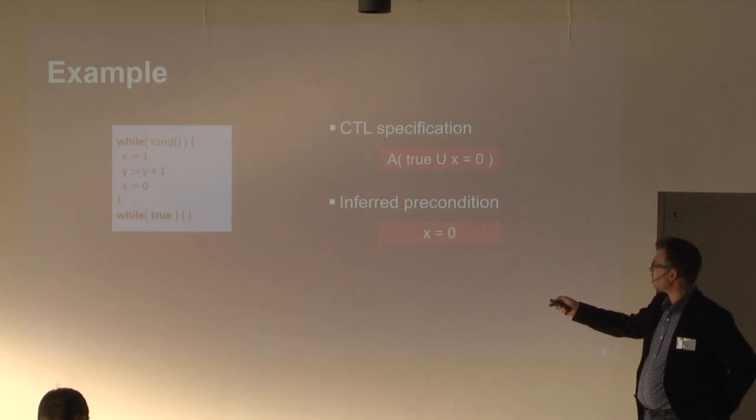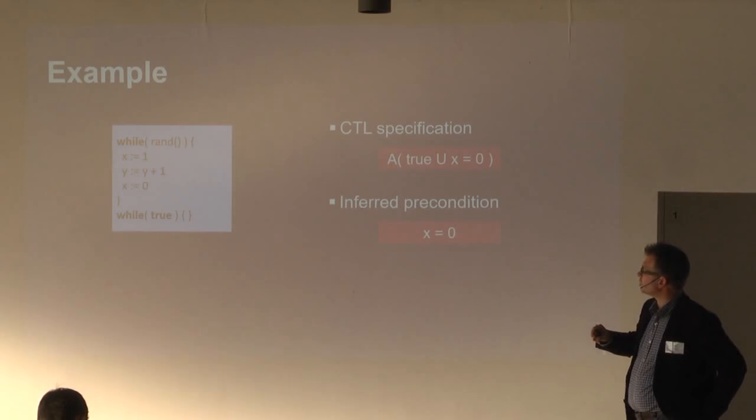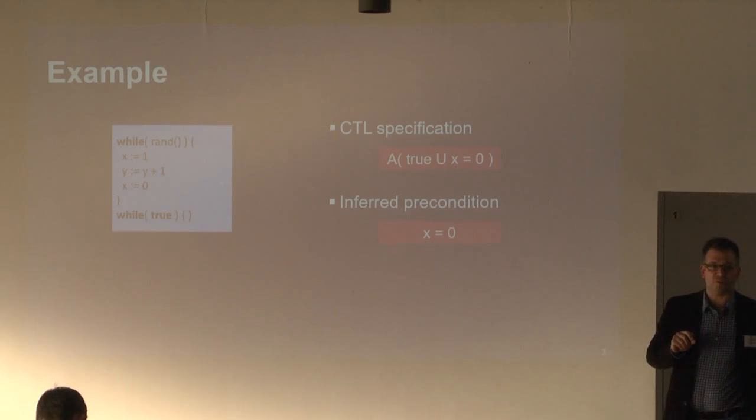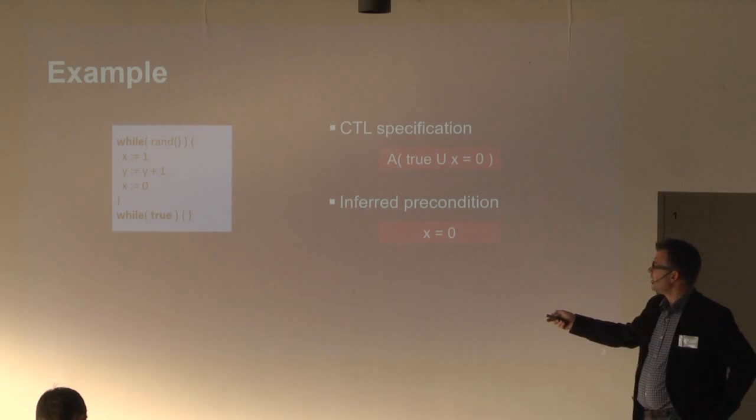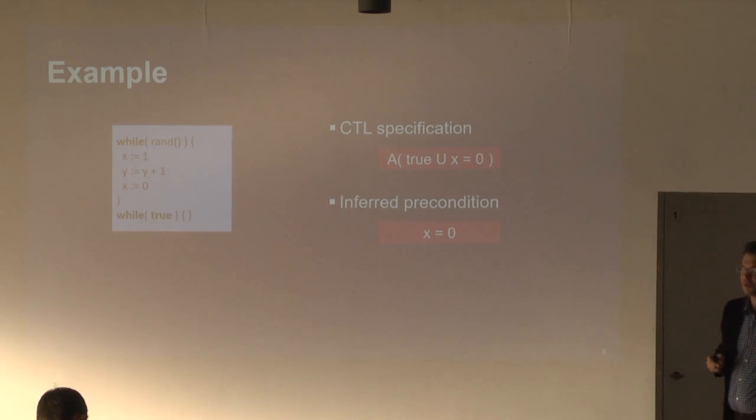In this running example, we have a loop that iterates an arbitrary number of times. At every loop head we flip a coin, and either do another iteration or terminate. In the loop body, we set x to one, increment y, and set x to zero. After the loop, we run into a non-terminating loop. You could imagine that setting x to one corresponds to acquiring a lock, and setting it back to zero corresponds to releasing a lock.